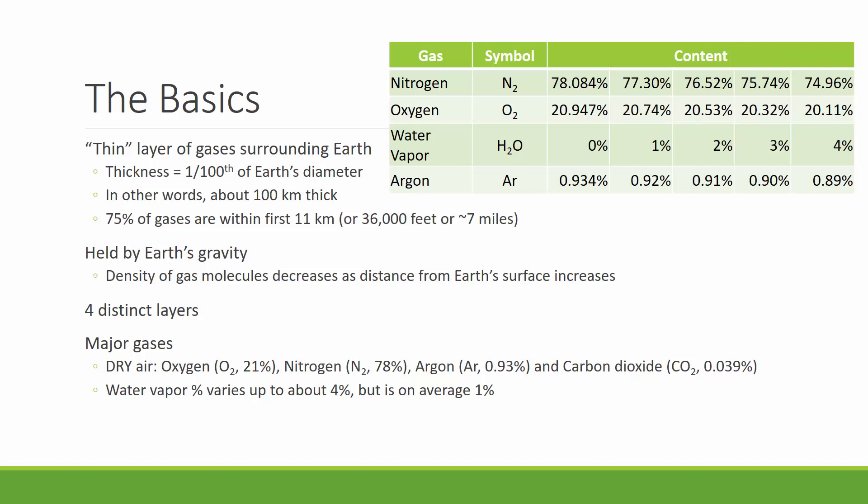Gravity is what holds the atmosphere close to Earth, and thus gravity causes the density of the gas molecules in our atmosphere to be denser closer to the Earth's surface. As you travel up in altitude, the density of gas molecules thins out. So if you've ever hiked up a tall mountain or been in an airplane, there are fewer gas molecules surrounding you, air pressure is lower, and it's harder to breathe. And if you go too far up, you cannot get enough oxygen.